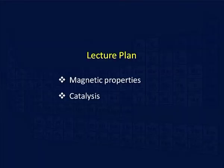In the last lecture, we saw some important properties of the first row transition metal ions, including the formation of alloys and other compounds and the variable oxidation state. In this lecture, I am going to cover two important properties of the transition metal ion: magnetic properties and catalysis by the first row transition metal ion. Let us first start with the magnetic properties.